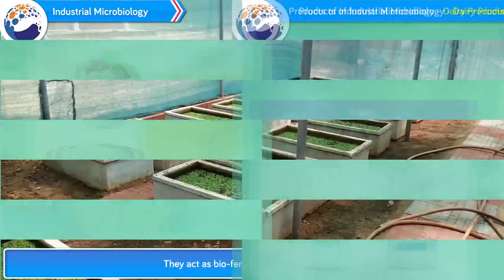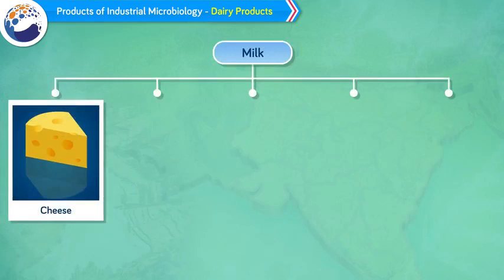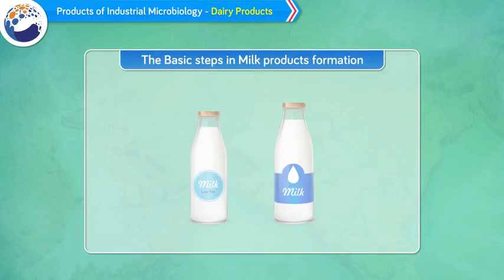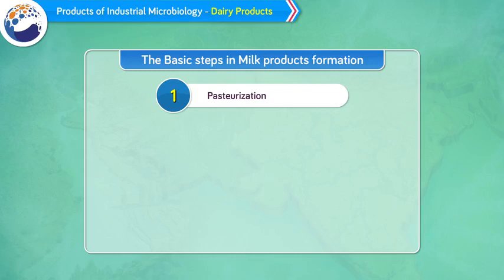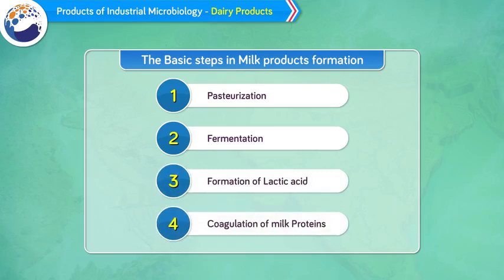Products of Industrial Microbiology. A. Dairy Products. Milk and milk products are produced since ancient times. Milk is converted into various products for its preservation, for example cheese, yogurt, butter, kefir, cream, etc. The basic process and microbes used for formation of milk products is the same. The steps are: 1. Milk is pasteurized, heated at 100 degrees Celsius to destroy unwanted microbes. 2. Fermentation with the microbe Lactobacilli. 3. Milk's lactose sugar is converted to lactic acid. 4. Milk protein gets coagulated.